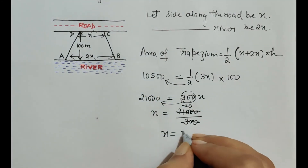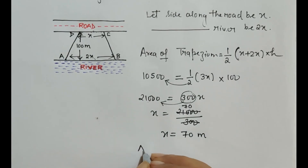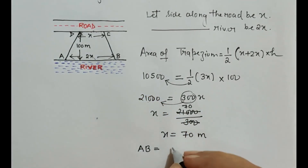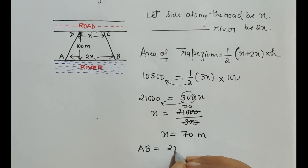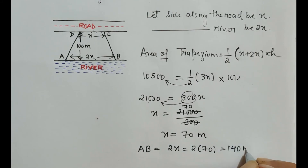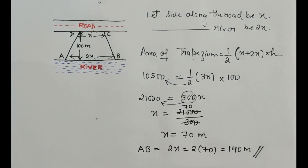The side along the river, which is AB, is twice of x, that is twice of 70, which is 140 meters. This is what we were asked to calculate. Thank you.